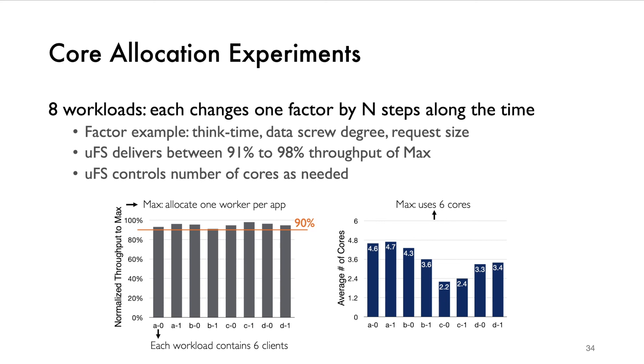We designed a core allocation benchmark which contains eight different workloads. We change one factor by controlled steps along the time. For example, change the request size, change the access frequency of file subset to generate data skew. The left graph shows the normalized throughput and the right bar chart shows the average number of cores used by USERVER. We can see UFS delivers over 90% performance compared with the maximum and importantly controls the number of cores as needed. Because each workload can test six clients, the 100% performance would need six cores in the right graph while UFS uses only 2.2 to 4.7 on average.